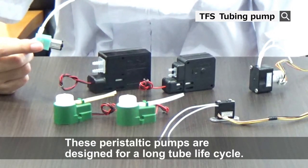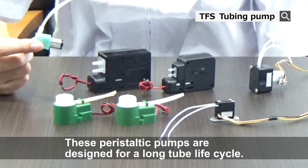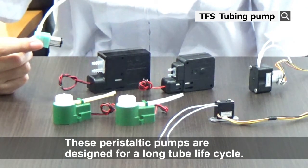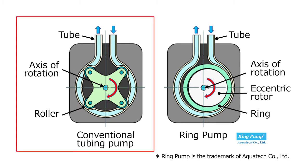The key feature of these peristaltic pumps is that they are designed for a long tube life cycle. Generally, as the picture shows on the left, the peristaltic pump delivers the fluid by compressing the tube with several small rollers.